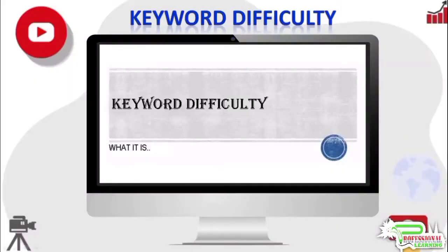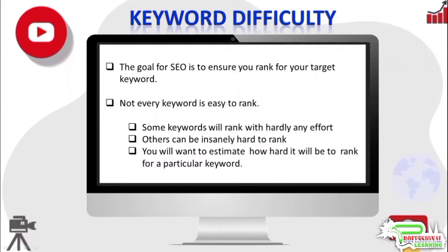Welcome to this video. Today we will discuss keyword difficulty. The goal of search engine optimization is to ensure your target keywords show up at the top of the search. Not every keyword is easy to rank — some keywords will rank without any effort, and some keywords can be so insanely hard to rank that you would not want to target them. Before you build a page around a focus keyword, you would want to know how easy or hard it will be to rank, and that is what we try to do when we estimate keyword difficulty.